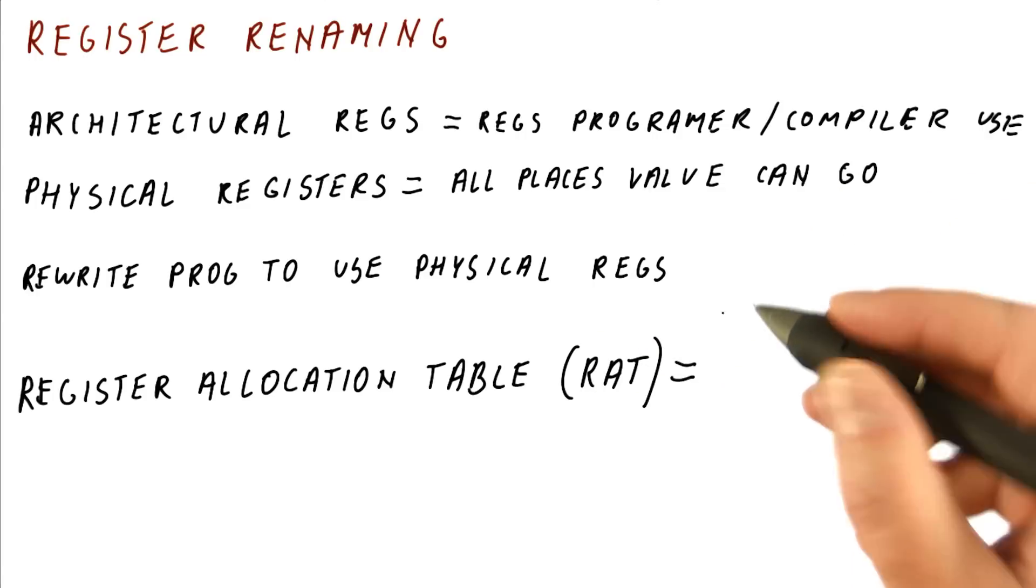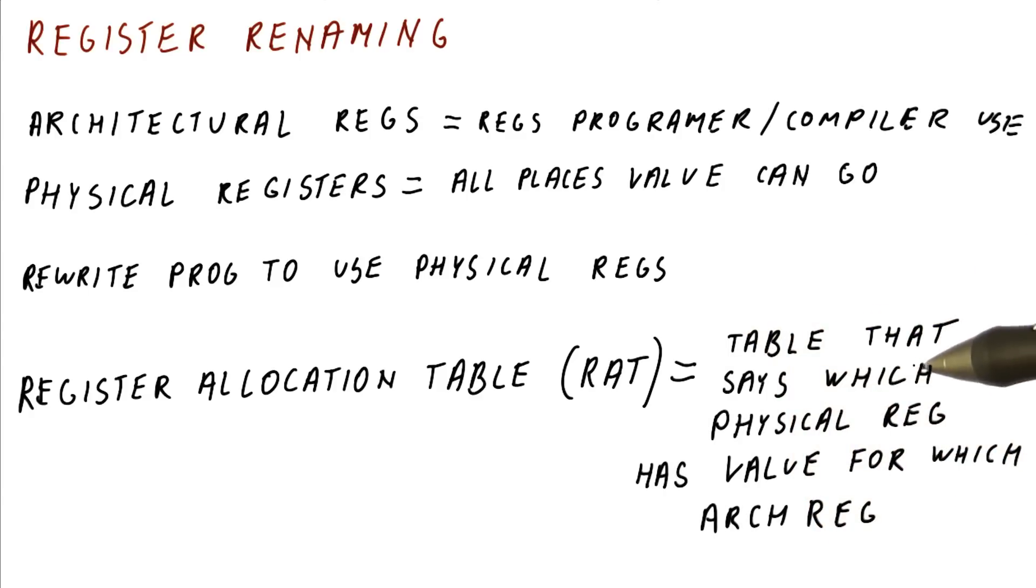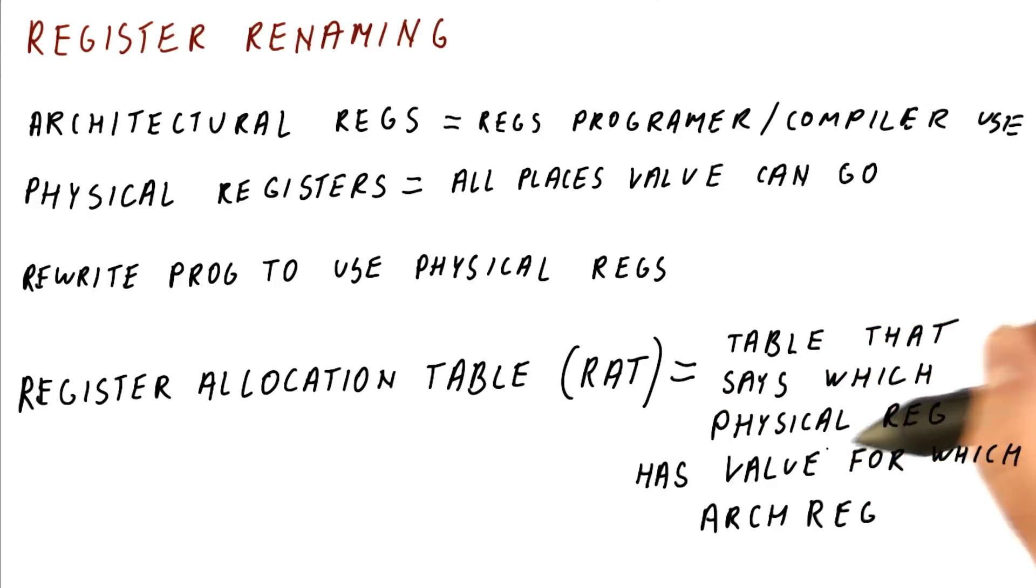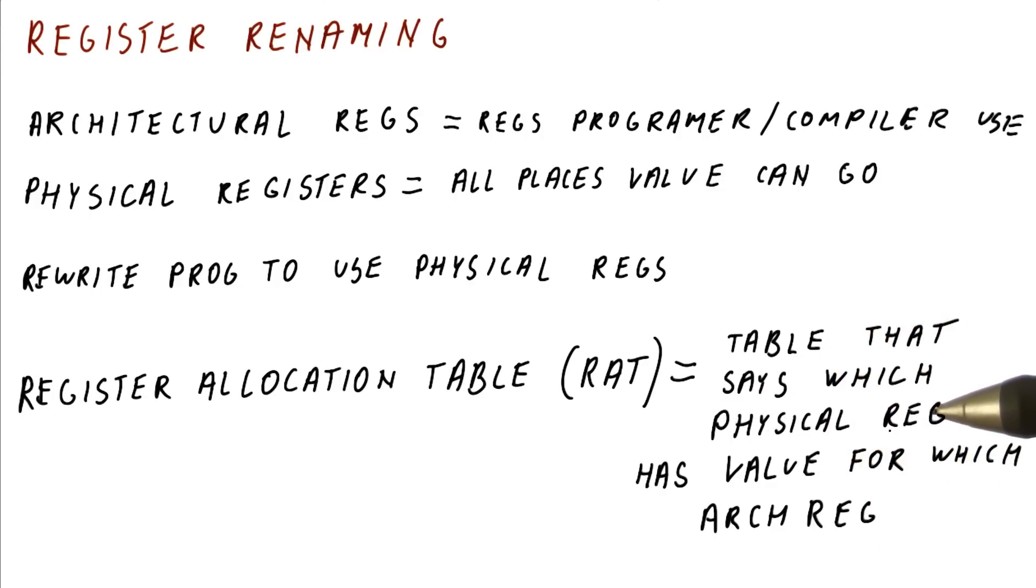What the RAT is, is a table that says which physical register has the value for which architectural register. So for each of the architectural registers there will be an entry in this table that says what is the current location in the physical registers where the value for that architectural register can be found.